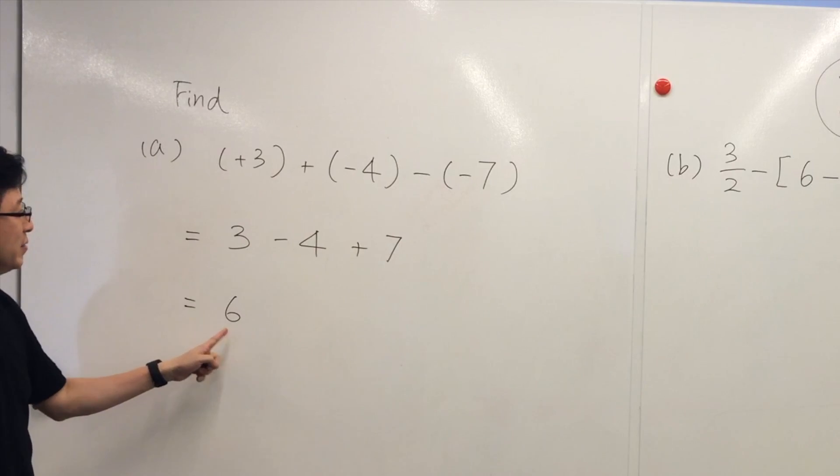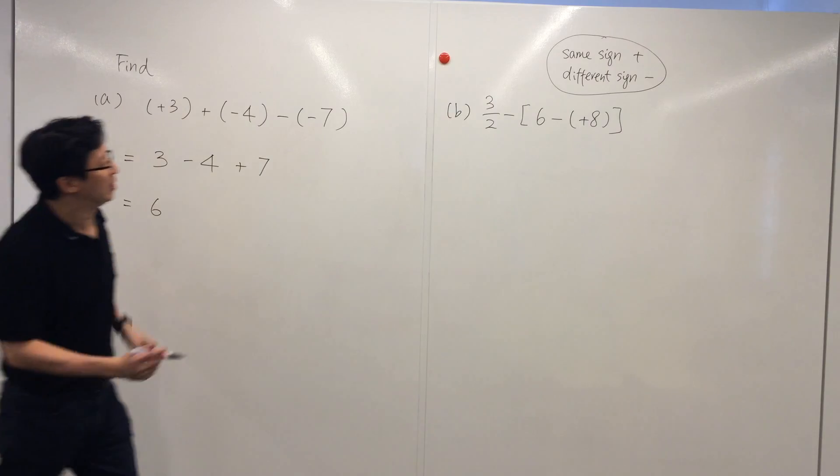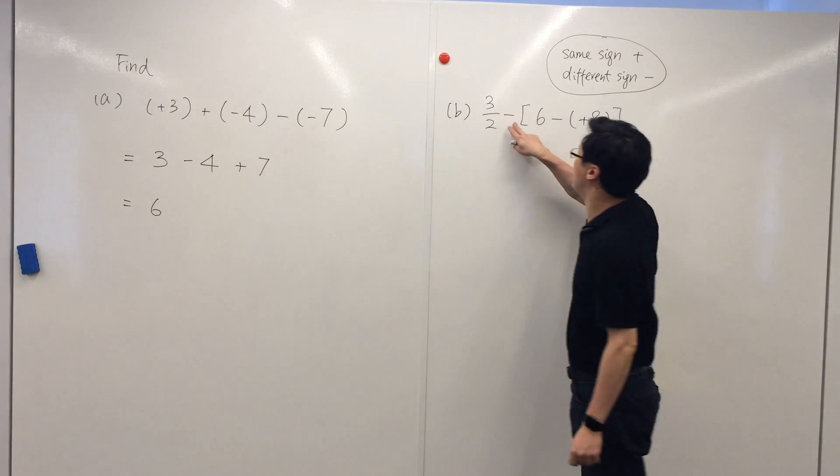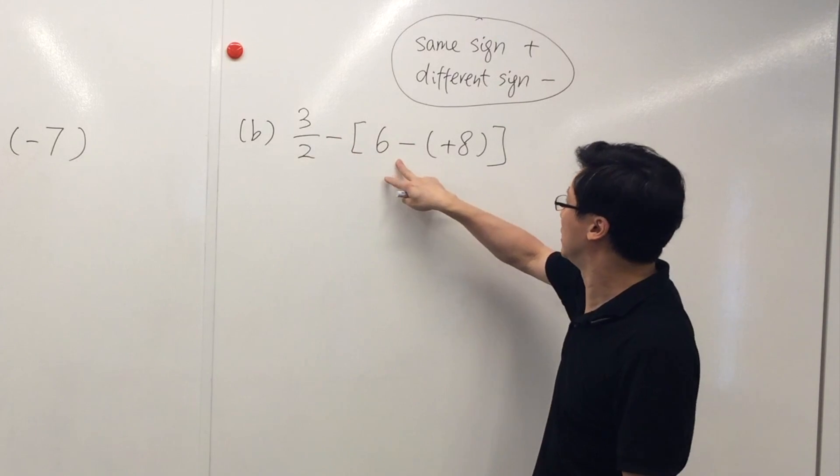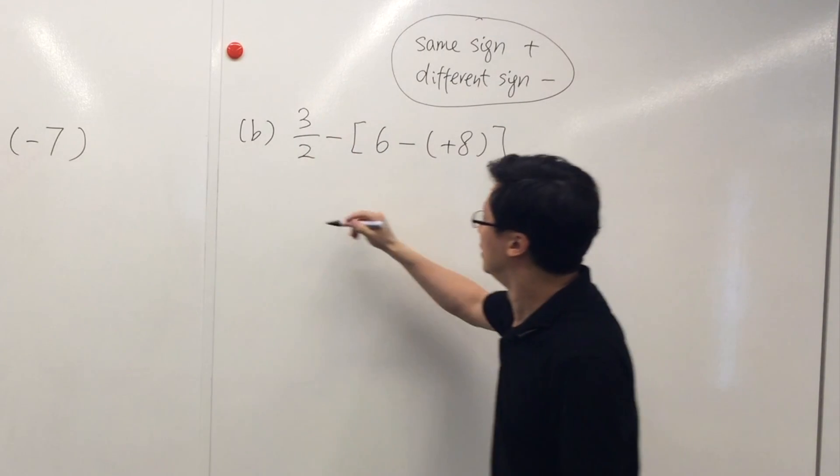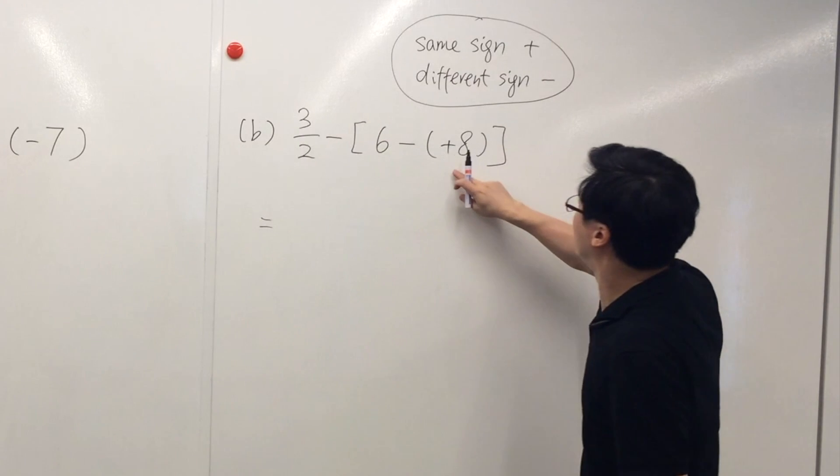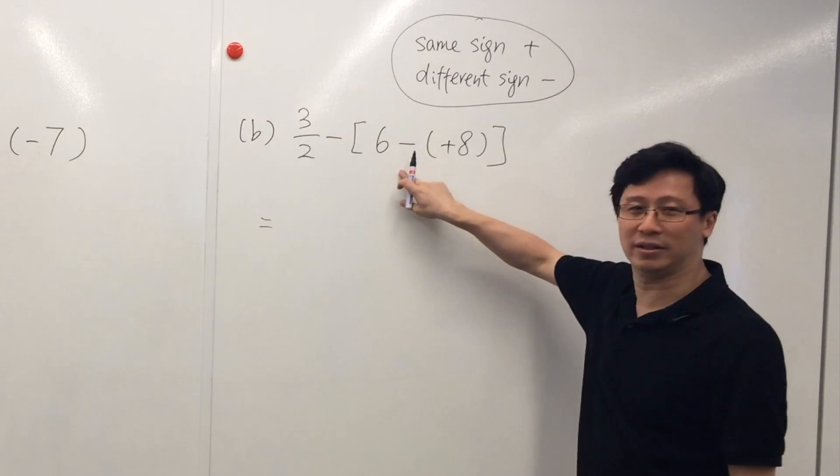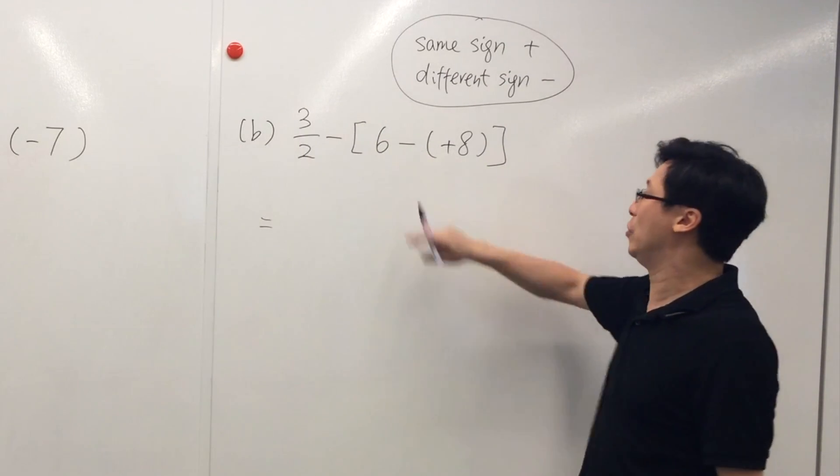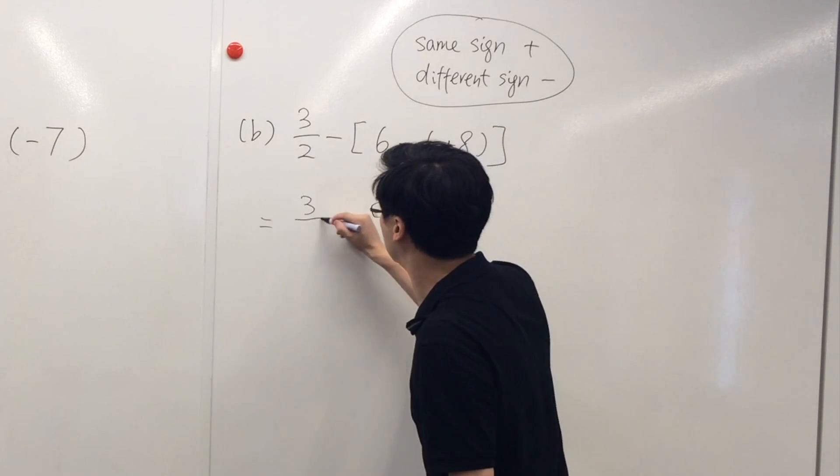And for part B, we have 3 over 2 minus square bracket 6 minus bracket positive 8. And remember, we have to simplify the numbers inside the bracket first. So this is 3 over 2 minus 6. We have a minus positive 8.